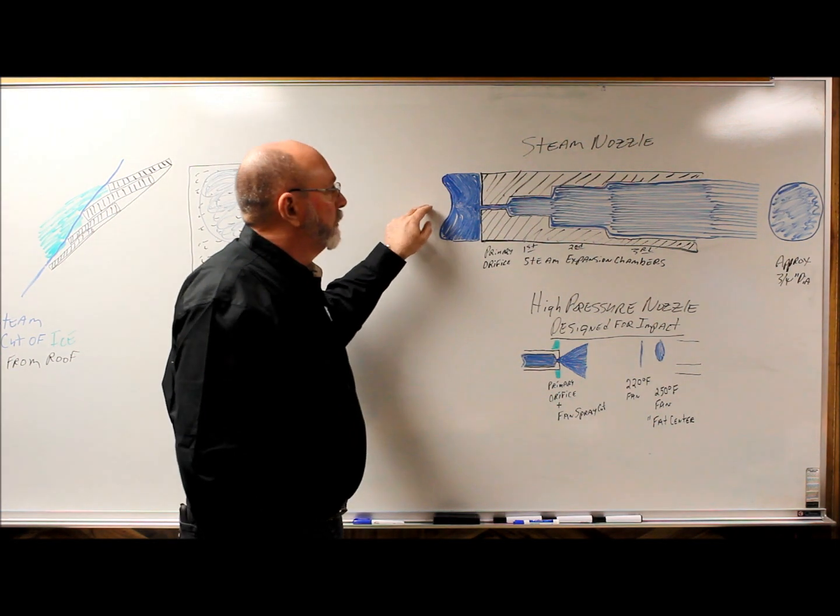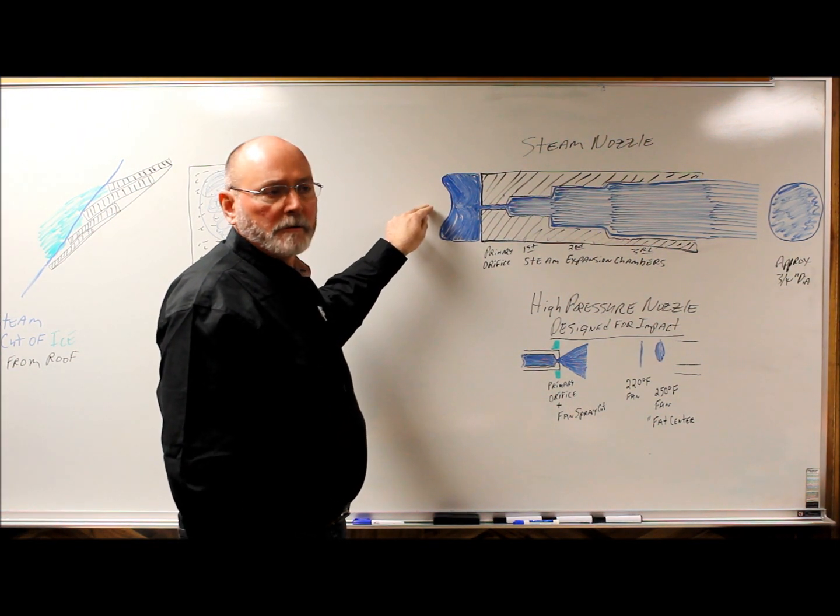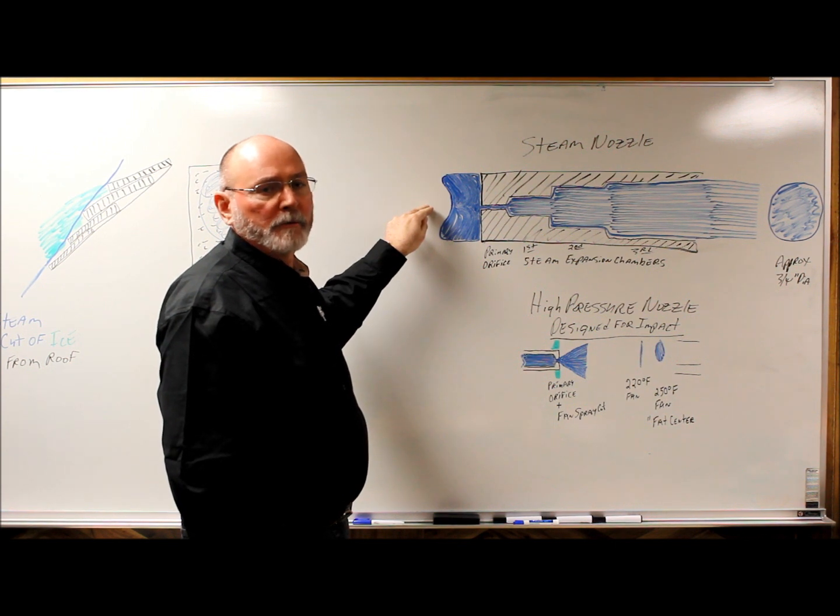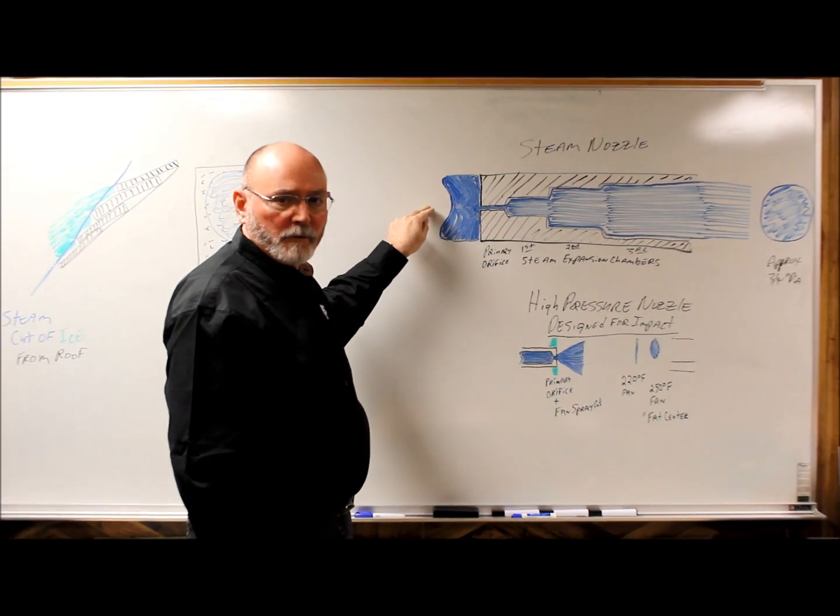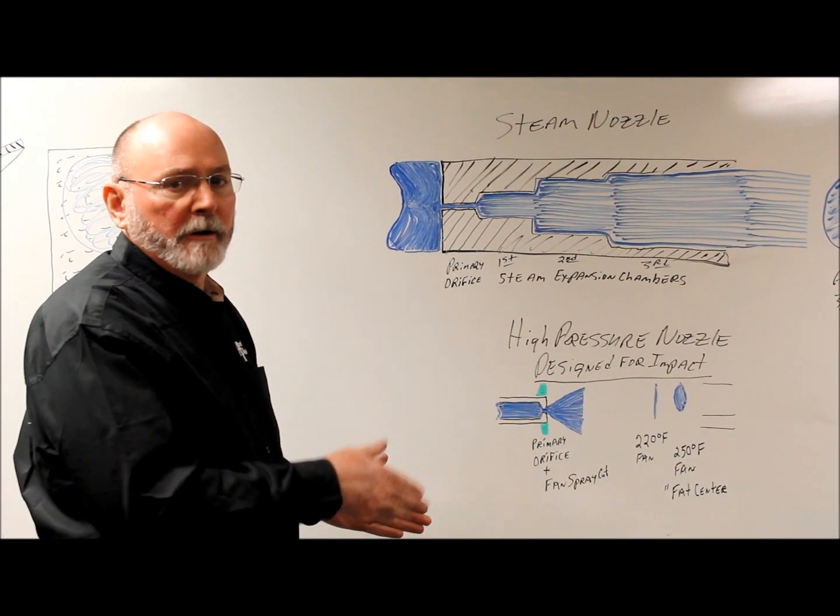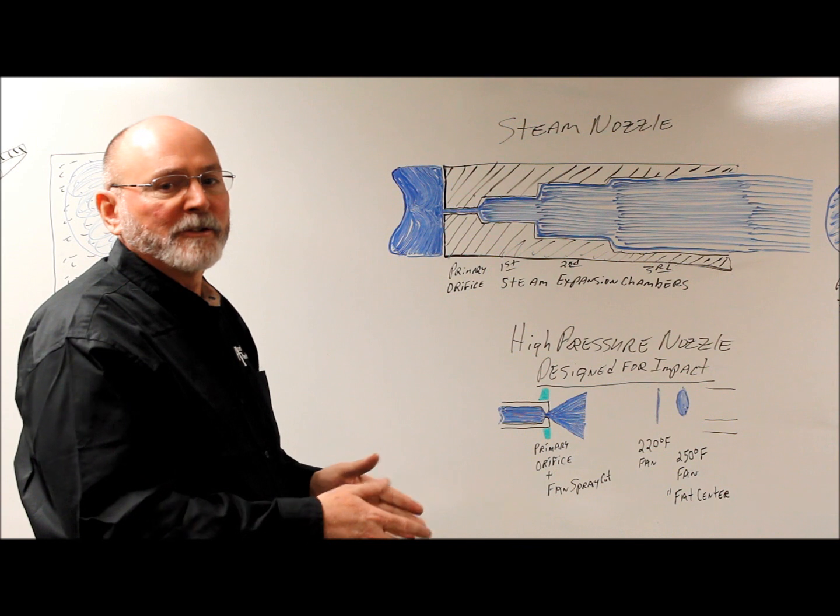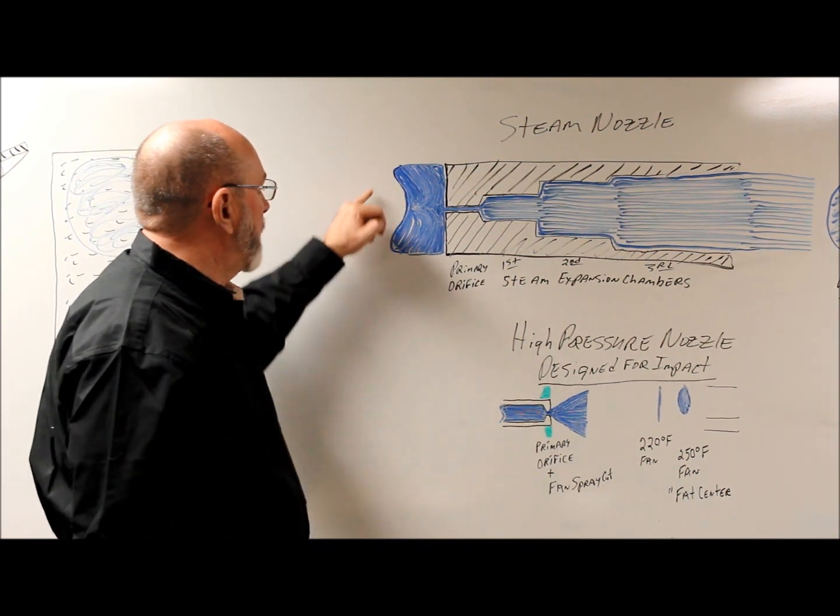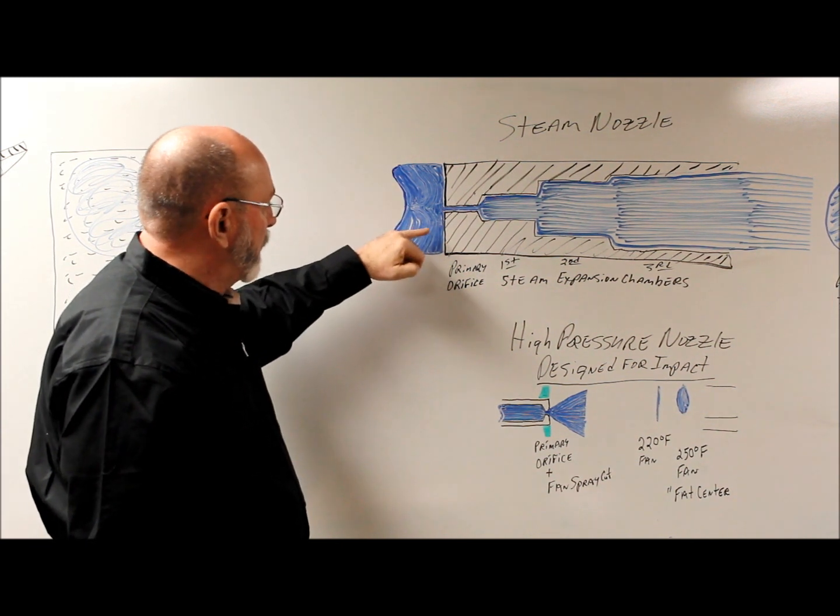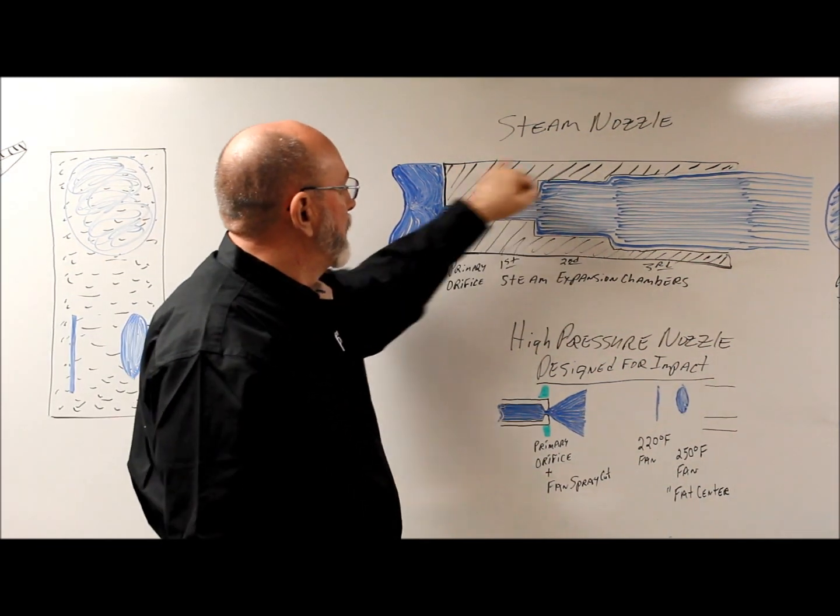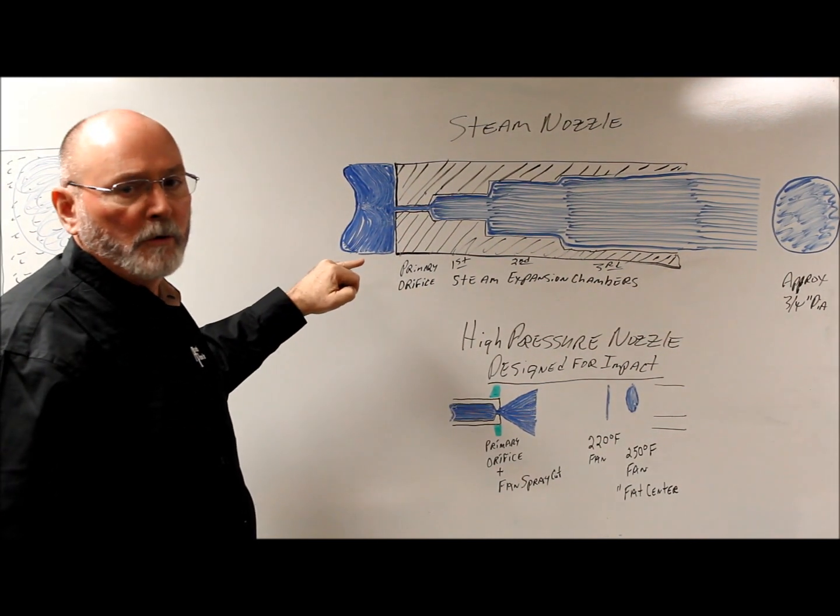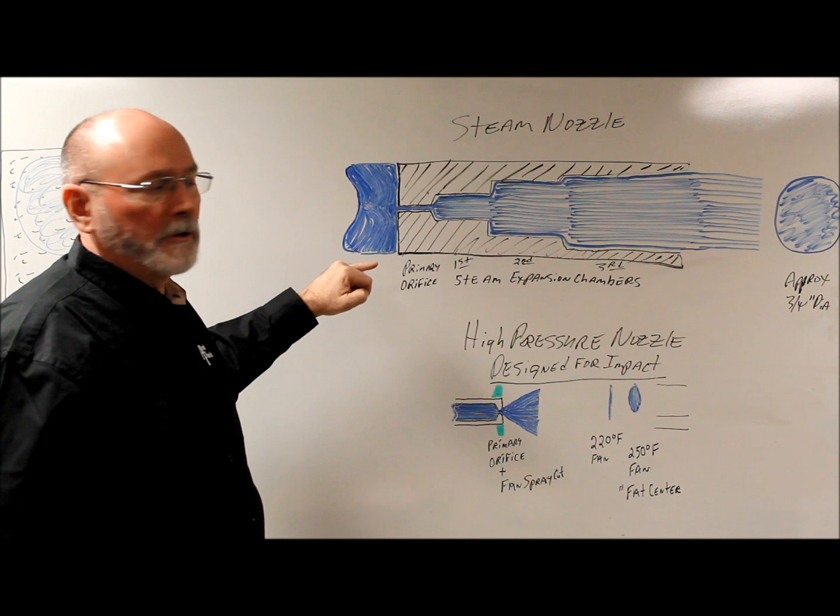Our steam nozzles we use for steam cleaners were basically designed in the 1940s and the first purpose when we designed the nozzles was for dissolving grease, actually removing grease, not taking grease from one area and moving it to another but actually dissolving the grease. So the nozzle was designed - this blue is representing the water flow or steam flow and then this black is the nozzle assembly. We first have the primary orifice which is sized based upon the flow and the pressure of the machine that you're using.